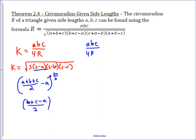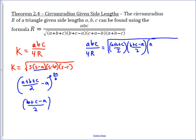Setting the two area formulas equal: ABC / 4R equals the square root of the semi-perimeter (A + B + C) / 2, times S minus A which is (B + C - A) / 2, times S minus B which is (A + C - B) / 2, and finally S minus C which is (A + B - C) / 2.